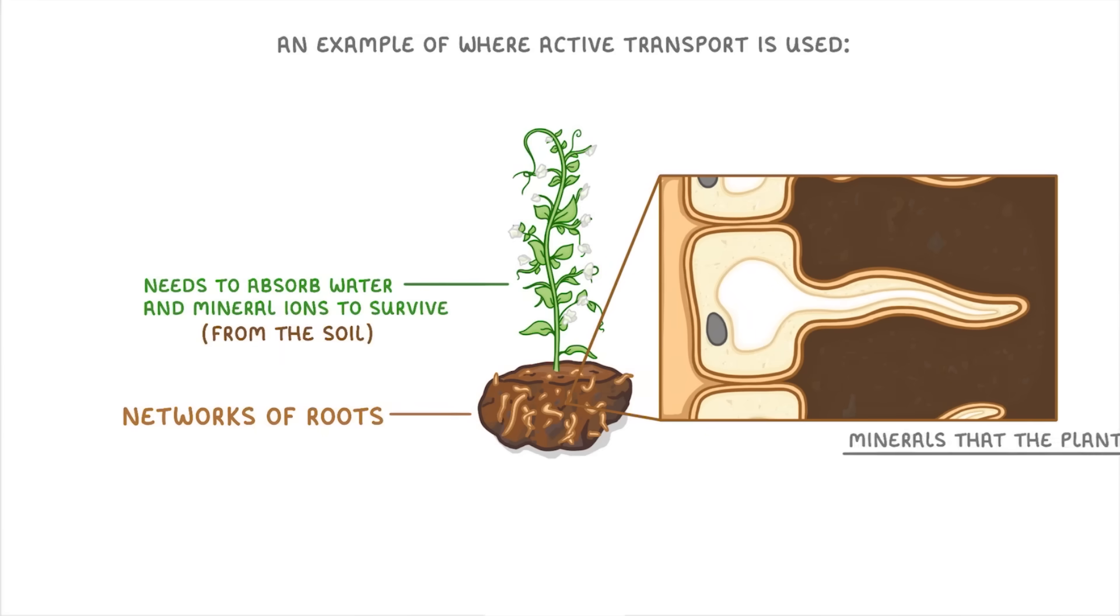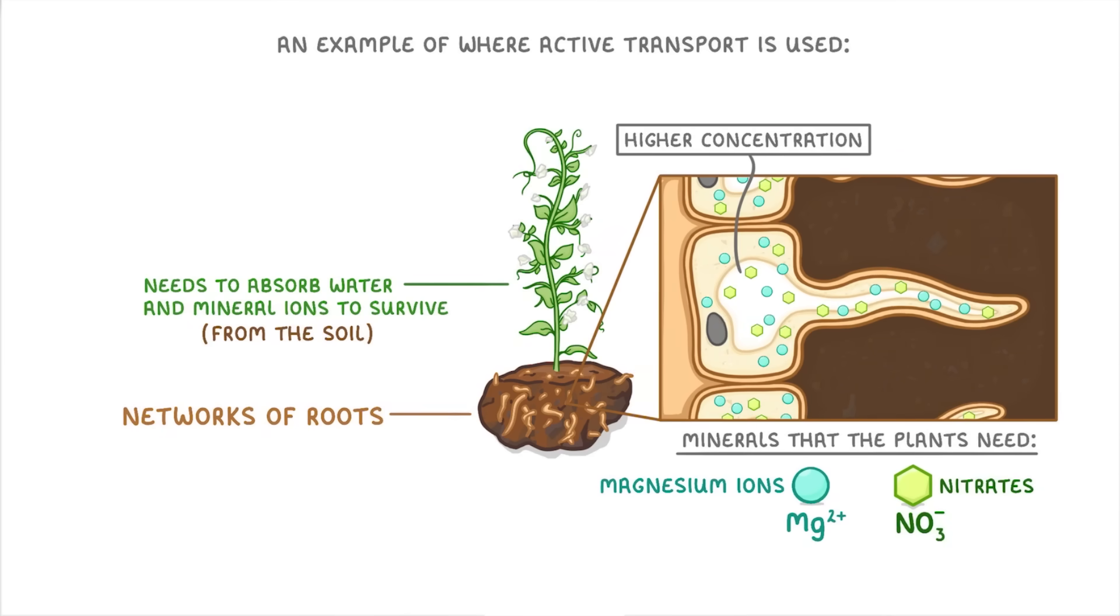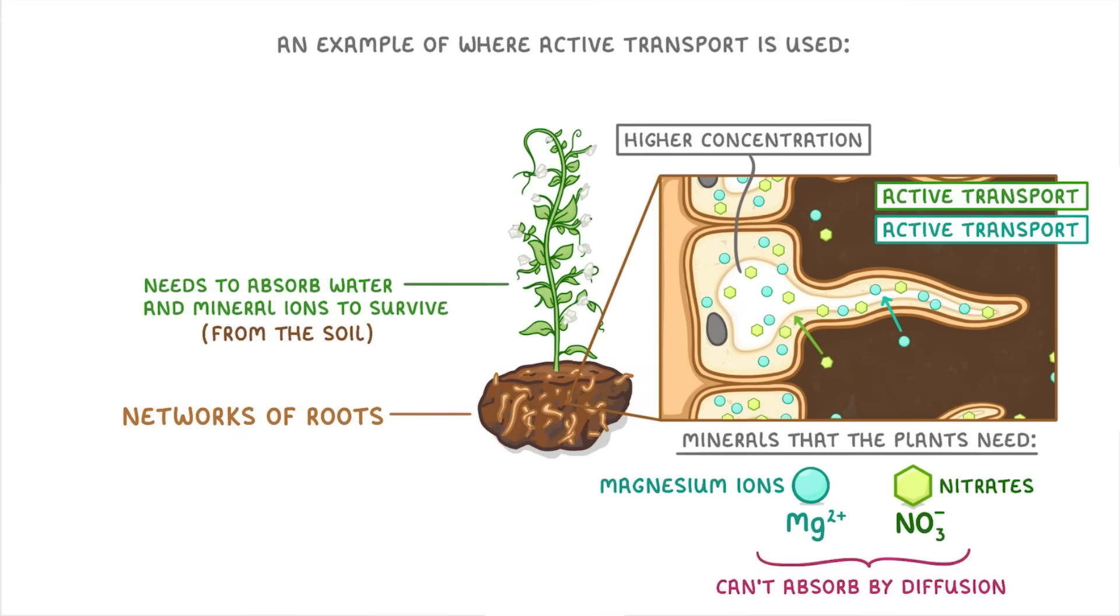Now the issue is that the minerals that the plants need, like the magnesium ions they need to produce chlorophyll, or the nitrates they need to produce proteins, are at a higher concentration inside the cell than they are outside in the soil, and so they can't absorb them by diffusion. Instead, they have to use energy to absorb them by active transport, against their concentration gradients.